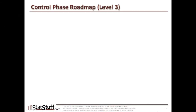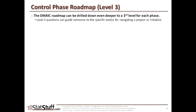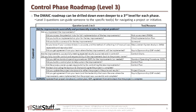Now let's dig a little deeper by looking at the third layer, the control phase of DMAIC. Just as we did in prior phases, we're going to dig into the third level for the control phase. What we're trying to do in the control phase is ultimately answer this top-level question: did the improvement successfully and permanently resolve the original problem? Once we can answer yes to that, the project will be complete. But in order to get there confidently, we have to ask ourselves a few extra questions at the second and third layer.